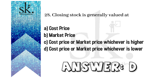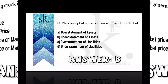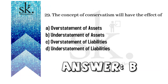The next question: closing stock is generally valued at — we discussed the doctrine of conservatism where we mentioned that it will be cost price or the market price, whichever is lower. Therefore the answer will be D.